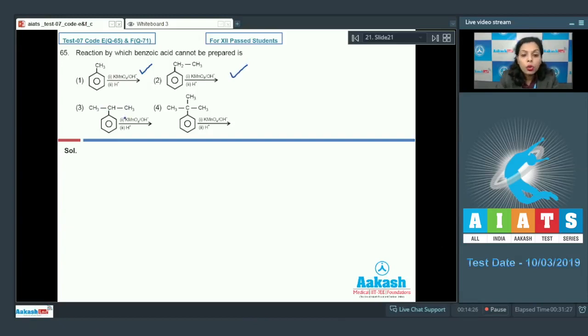Now after this, we have 2-phenyl propane and alkaline KMnO4 is added to it followed by H plus ion. This will also give you benzoic acid. So I'll mark here a tick.